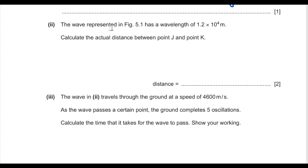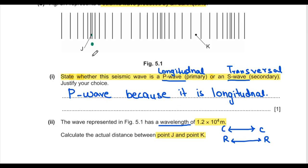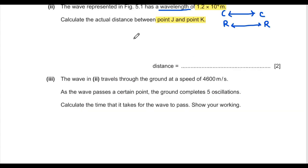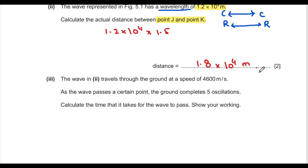Part two: the wave in figure 5.1 has a wavelength of 1.2 × 10⁴ m. Calculate the actual distance between points J and K. In a longitudinal wave, the wavelength is the distance between two consecutive compressions. Looking at the figure, there is one complete wavelength plus one half wavelength between J and K, giving a total distance of 1.5 × 1.2 × 10⁴ = 1.8 × 10⁴ metres.